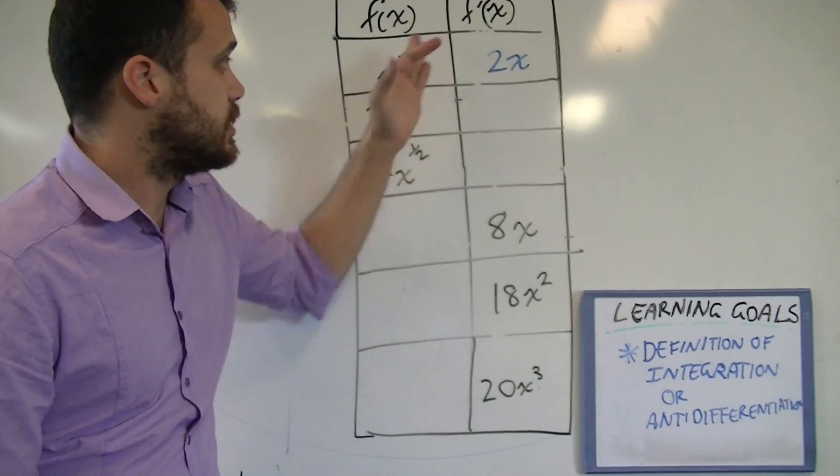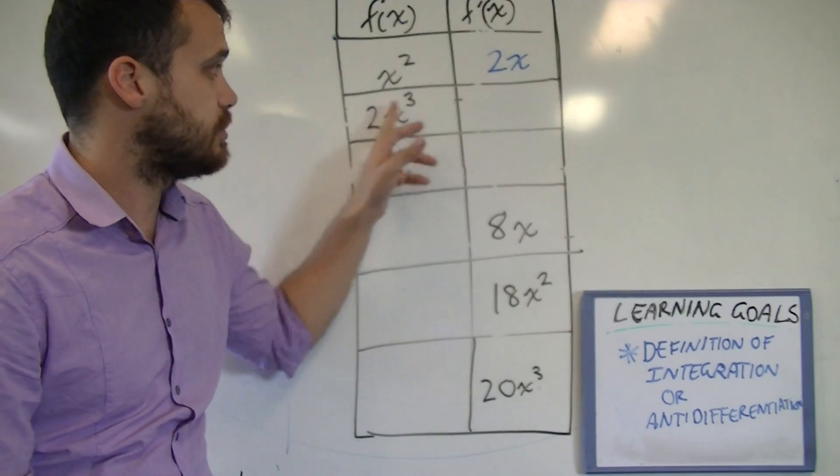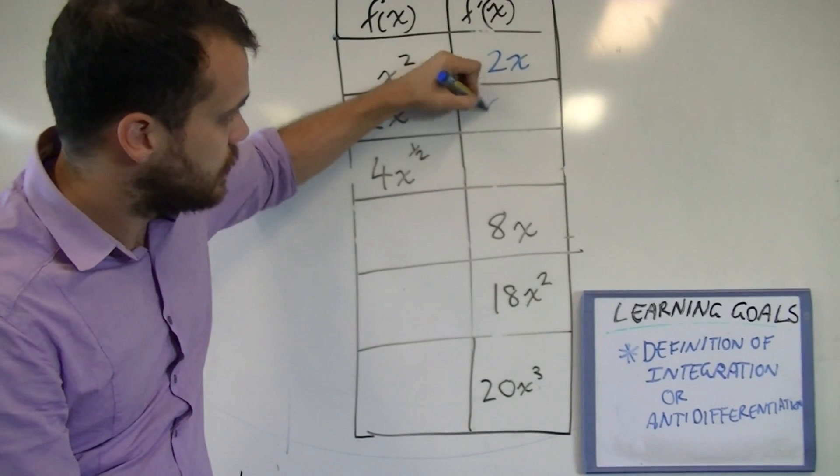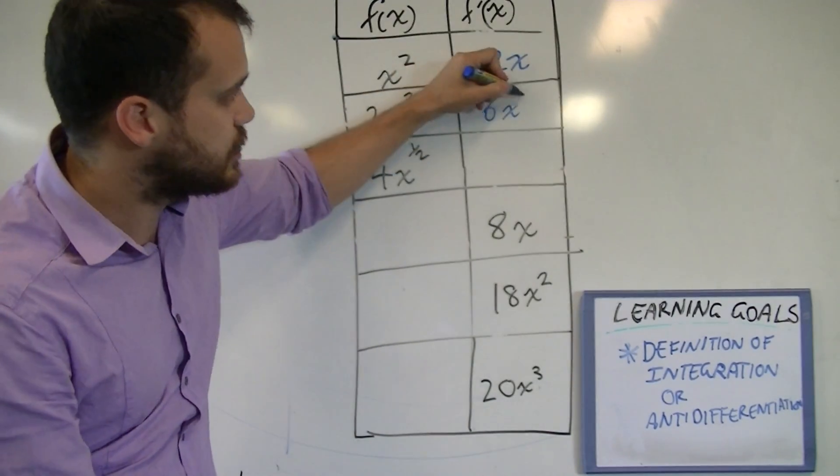Now this next one, 2x cubed, the derivative of that is equal to 2 times 3, which is 6x. And then you decrease that power from 3 to 2.